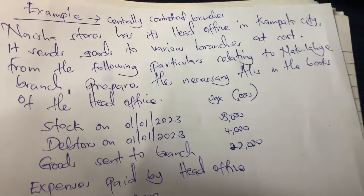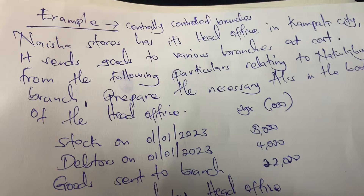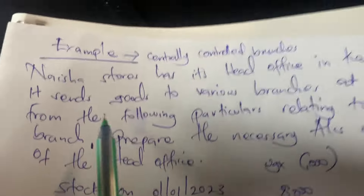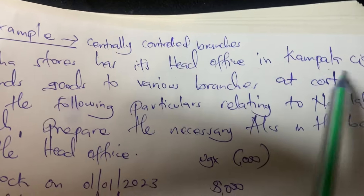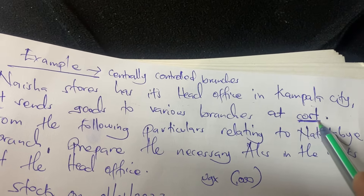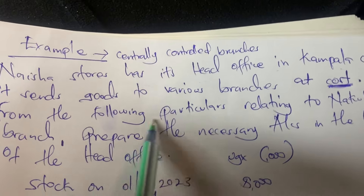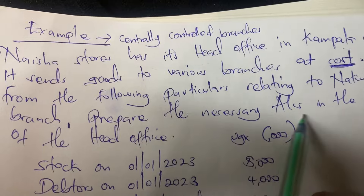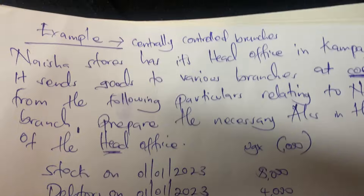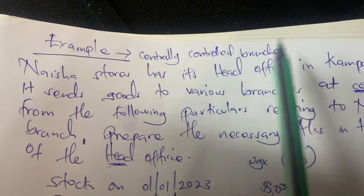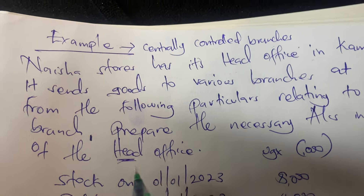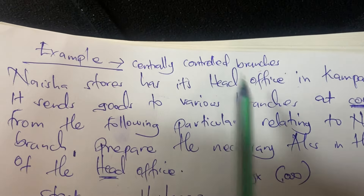Welcome to my channel. In this video we are going to have an example on centrally controlled branches when goods are sent at cost. Nature Stores has its head office in Kampala city and sends goods to various branches at cost. Since the accounts are prepared in the books of the head office, this is an essentially controlled branch.